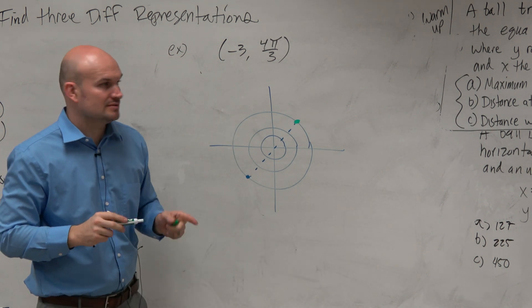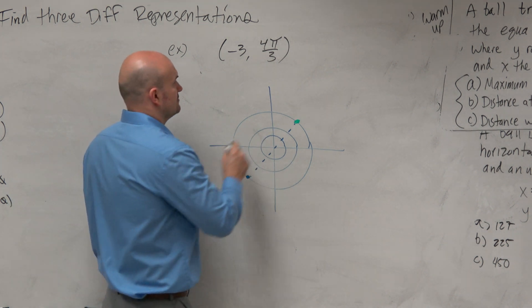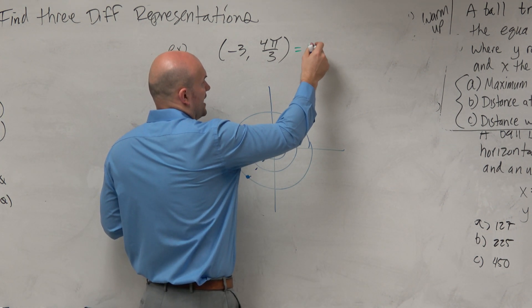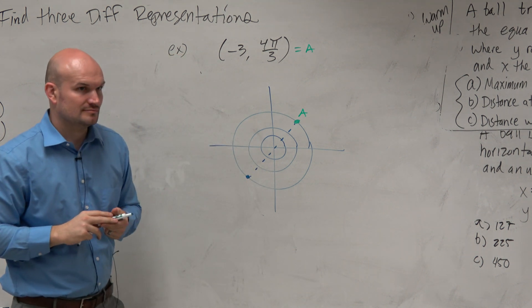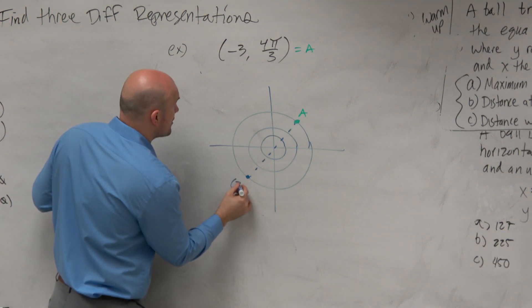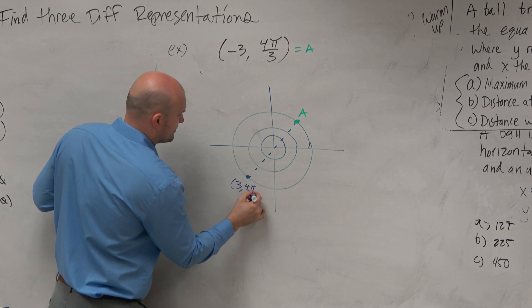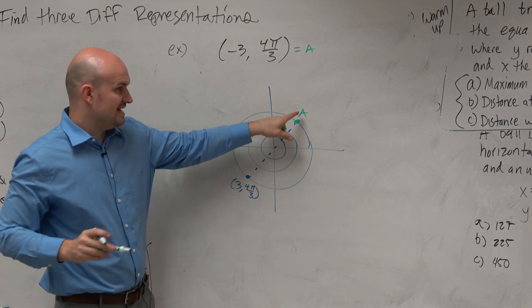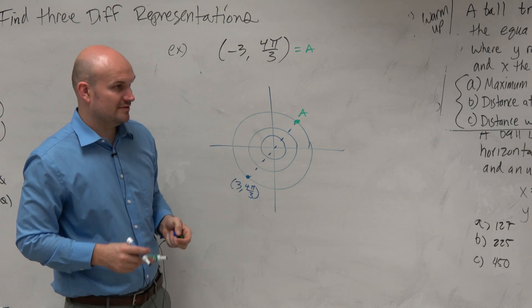So that is actually the answer right there. So let's call this A. That's A. This is the point 3, 4π over 3. This is the point negative 3, 4π over 3.